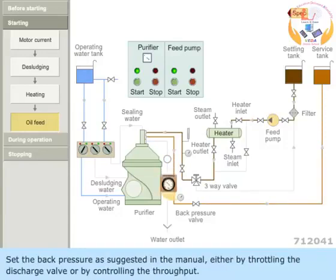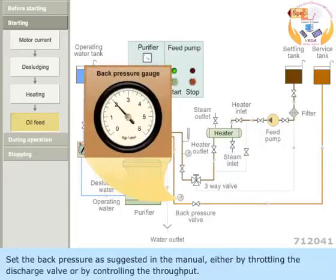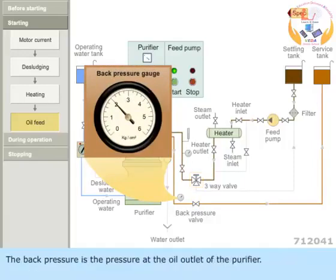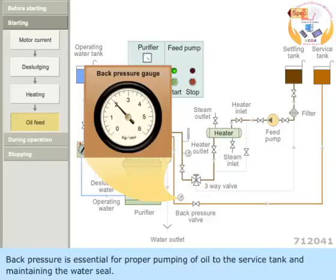Set the back pressure as suggested in the manual either by throttling the discharge valve or by controlling the throughput. The back pressure is the pressure at the oil outlet of the purifier. Back pressure is essential for proper pumping of oil to the service tank and maintaining the water seal.